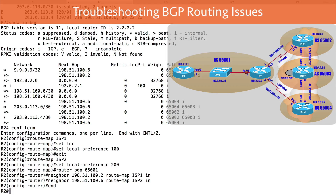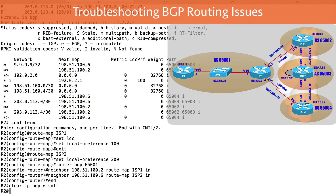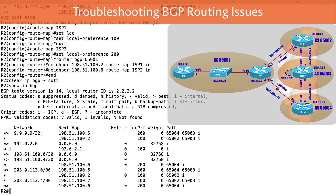To make this take effect, let's reset the BGP process with 'clear IP BGP * soft' — a less intrusive reset. Now doing 'show IP BGP', we can see that to reach the 9.9.9.9/32 network, we're going via ISP2 as indicated by the greater-than sign. That's because of the local preference — 200 for ISP2 versus 100 for ISP1. We've now influenced outbound path selection to prefer the higher-bandwidth ISP.